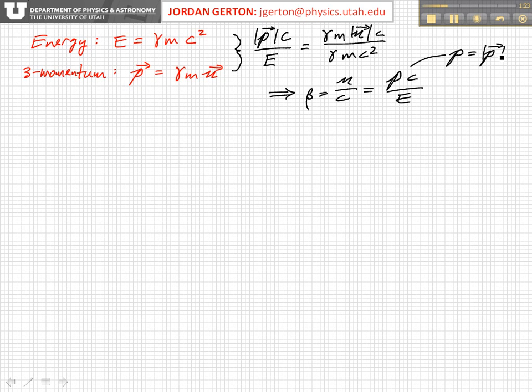So this is a really handy expression, because what it says is that if you want to know what the beta is, basically if you want to know what the velocity of a particle is, you just need to know its momentum, its total momentum, and its total energy. And from those two things, you immediately find the velocity.